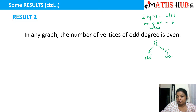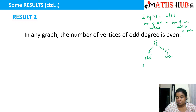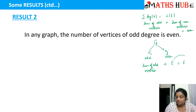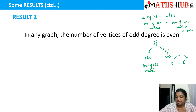So we have: sum of odd-degree vertices plus sum of even-degree vertices equals some even number on the right-hand side. When we transfer the even sum of even-degree vertices to the right-hand side, we get that the sum of the odd-degree vertices is always even. This is our second result.